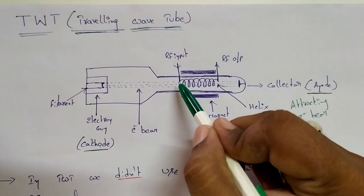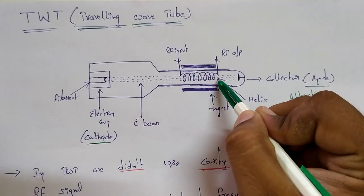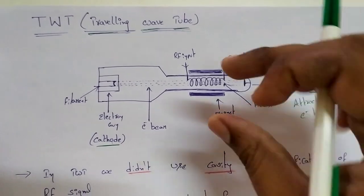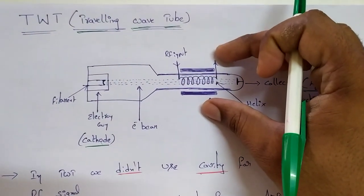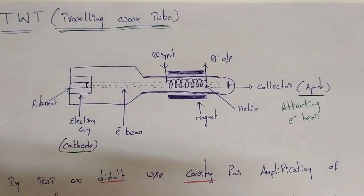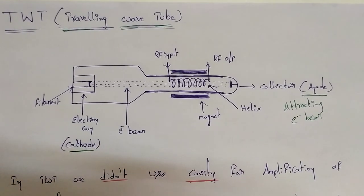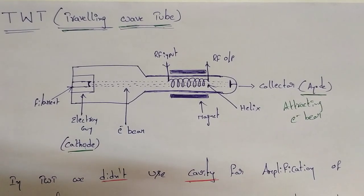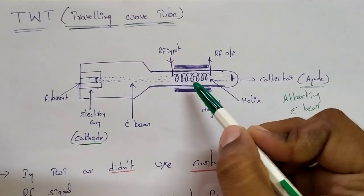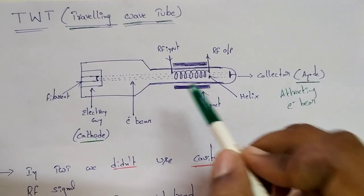We have a helical shape — nothing but an inductor shape. We have to place a wire in a cylindrical tube. We have to place a helix wire in a spring shape inside the tube. This is an inductor.